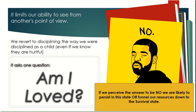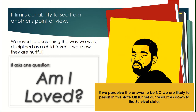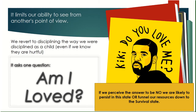Emotional state limits our ability to see from another person's point of view. We revert to disciplining the child the way we were disciplined as a child, even if we know those things are hurtful. Even if we didn't like it when our parents said, 'I'll give you something to cry about,' or maybe we got spanked or grounded. We all logically know that stuff didn't really work — it might have scared us enough to stop us, but we didn't really learn anything other than to be scared. Those are the skills we have to deal with kids in our care. When we're in our emotional state, we can't think of a better way to do anything. And this is when we find ourselves saying the things we said we'd never say.